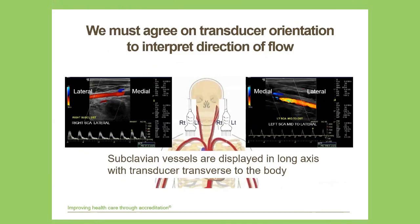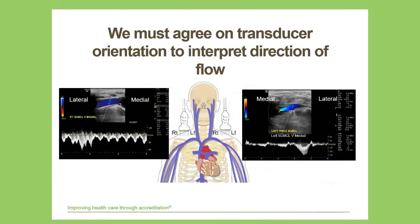We must always make sure the left side of the screen is oriented toward the right side of the patient. Likewise with the vein — we look at whether flow should be approaching or receding from the line of sight, and we must agree on transducer orientation to interpret direction of flow. One area of major concern: if there is central vein obstruction, flow will essentially hit a wall somewhere in the brachiocephalic or superior vena cava and reverse direction.